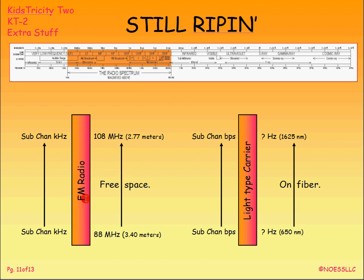Let's look at a radio system — FM radio. I have a sub-channel coming in, maybe 40 kHz or 80 kHz depending on the radio station. They bring that sub-channel in and do the same thing — modulate it, heterodyne it, mush it, whatever term you like — so that it comes out onto the radio antenna, between 88 MHz and 108 MHz for FM radio, and it radiates in free space.